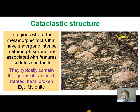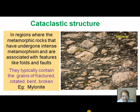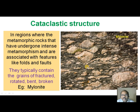Cataclastic structure. In some regions, the metamorphic rocks undergo severe metamorphism and are associated with folds and faults. In these rocks, when they are associated with folds and faults, we can find the grains which are in a bent position, broken position, or fractured position. The field photograph very clearly shows the rotated, bent, broken, and fractured minerals in a rock, and we say the rock is exhibiting cataclastic structure. Mylonite is the best example for cataclastic structure.